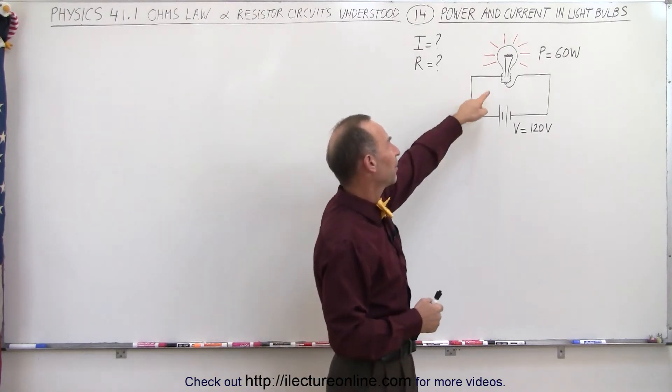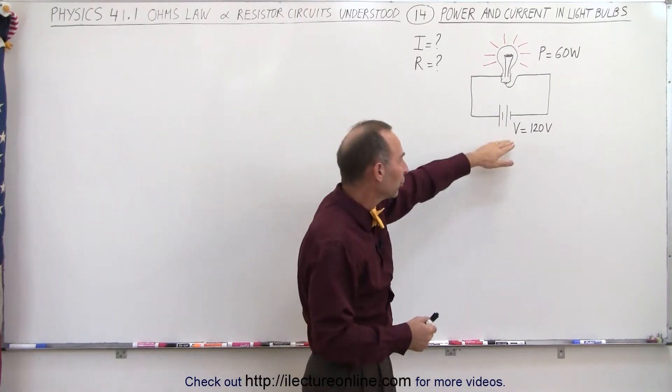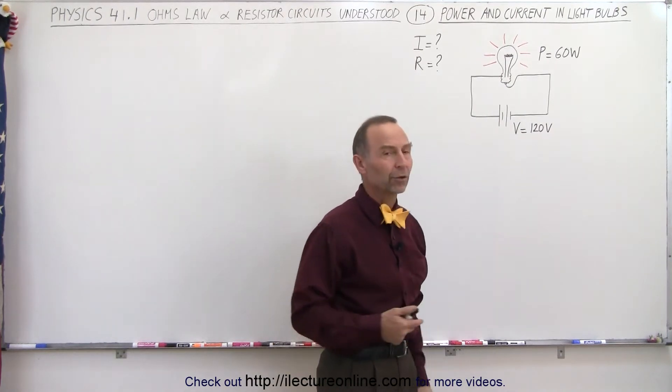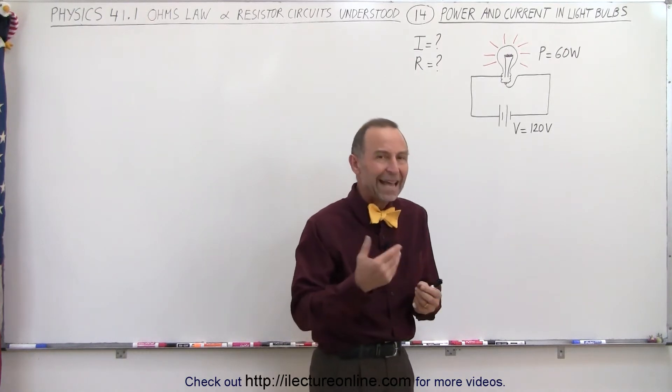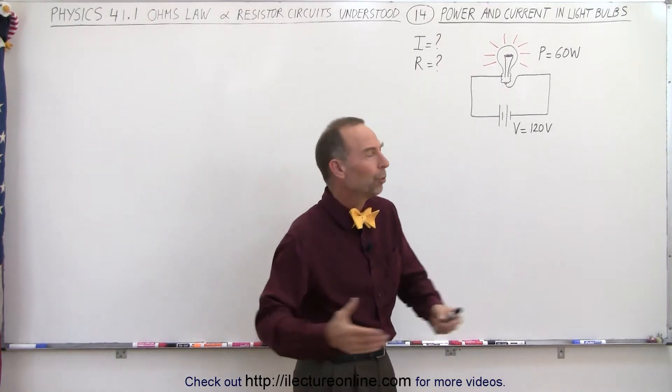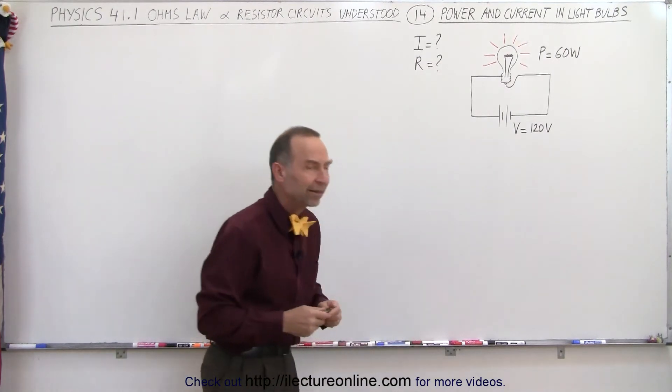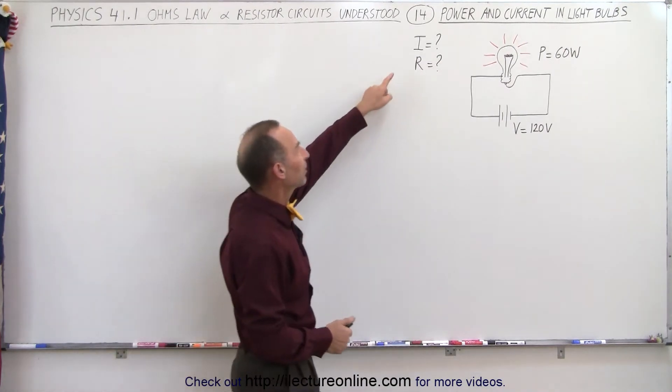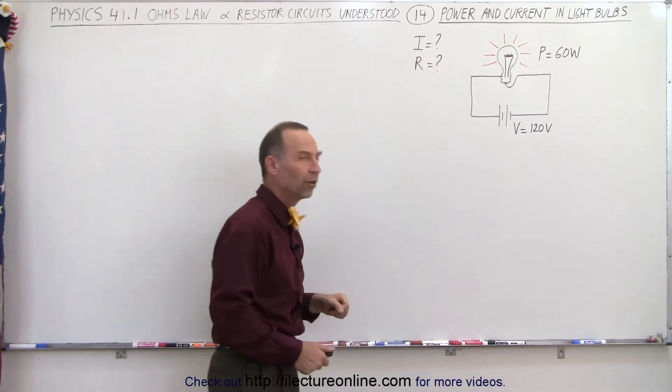Let's say that we have a light bulb that's rated at 60 watts and let's say that the voltage supply is equal to 120 volts. Now typically with household circuits we have AC current, but just for the moment let's say we have a DC current here and we have a light bulb rated at 60 watts. We're trying to find the current flowing to the light bulb and we're trying to find the resistance of the light bulb.